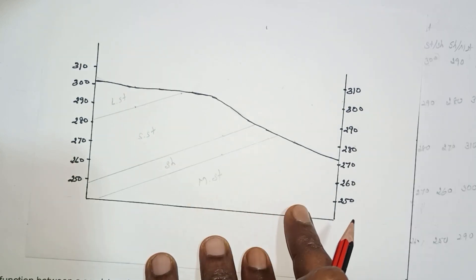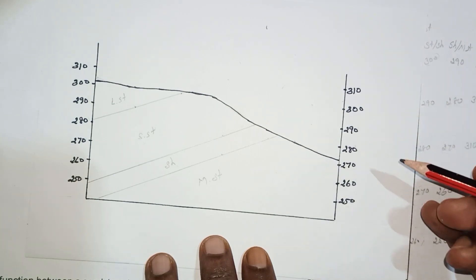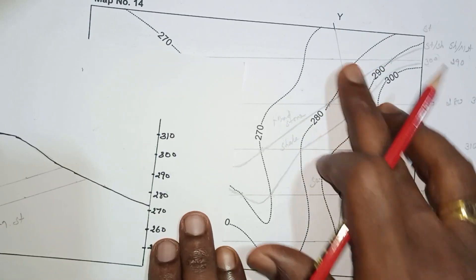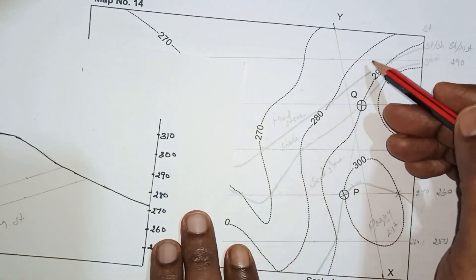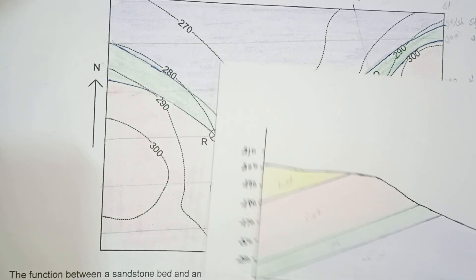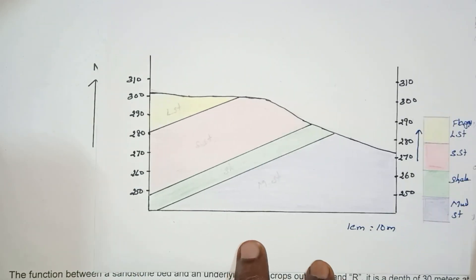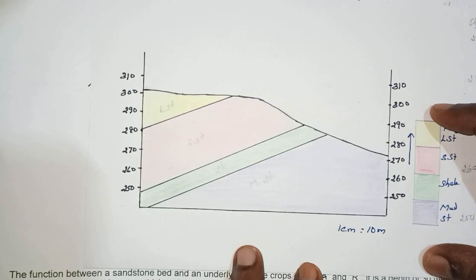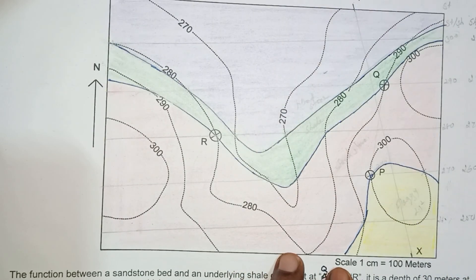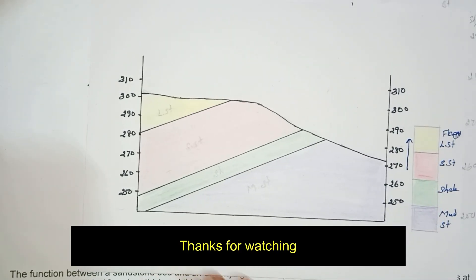Color the formations and your cross section is ready. You can find the dip and strike from the contour using the strike interval. Give the same colors in the cross section as on the map, write down the geological section, and your map and cross section are complete.